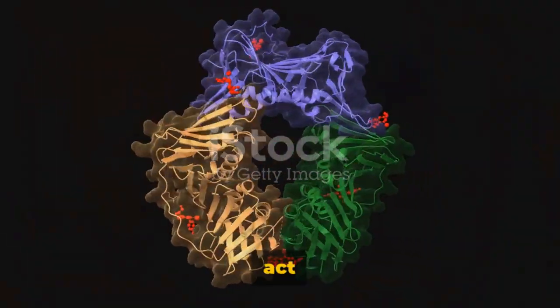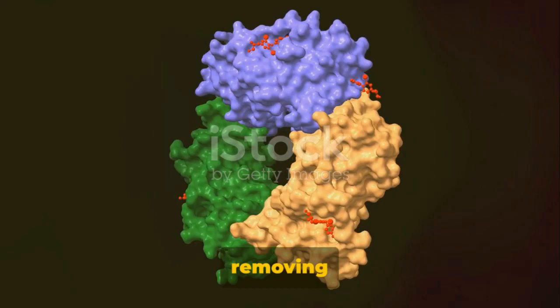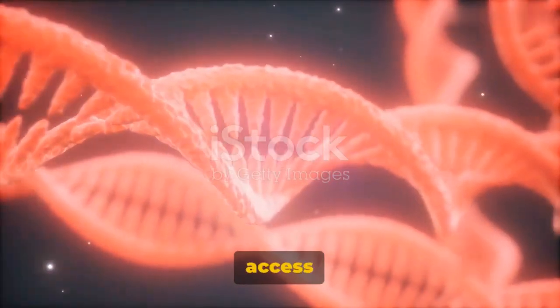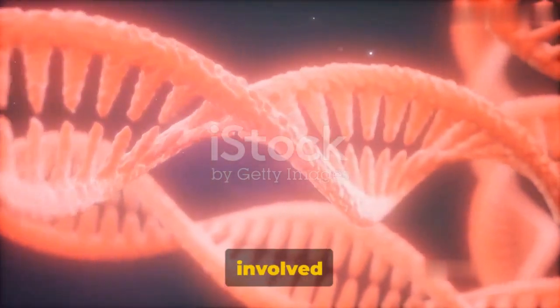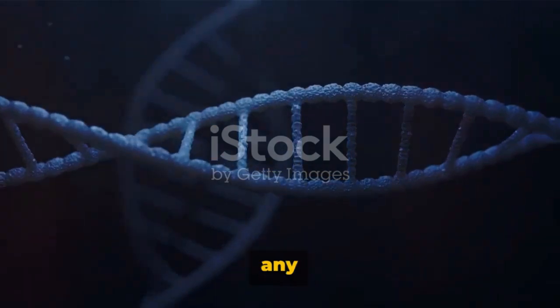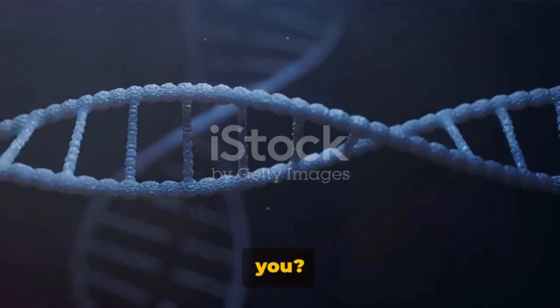SSB proteins also act as the cleanup crew, removing unwanted secondary structures on strands. This allows for easy access of the strands to the machinery involved in DNA replication. It's like clearing the path for a parade. You wouldn't want any obstacles in the way, would you?